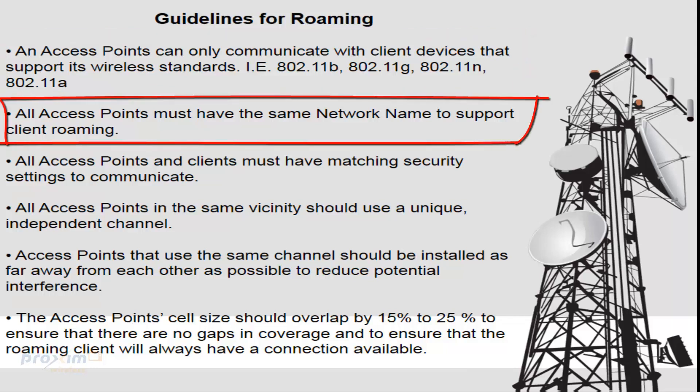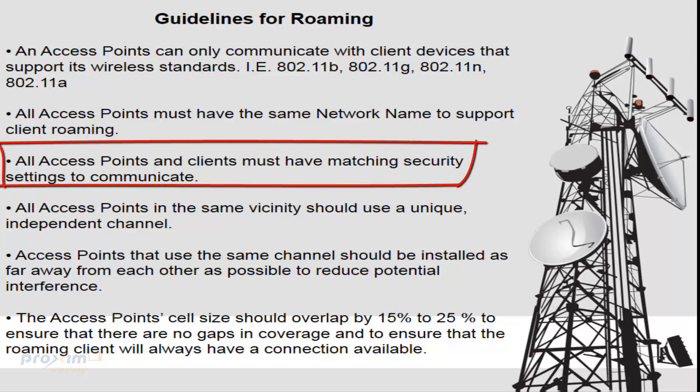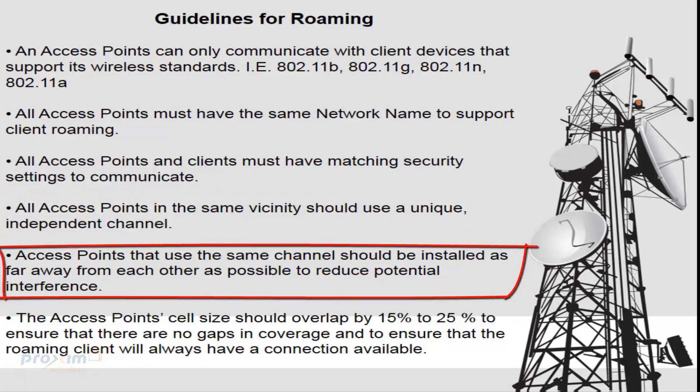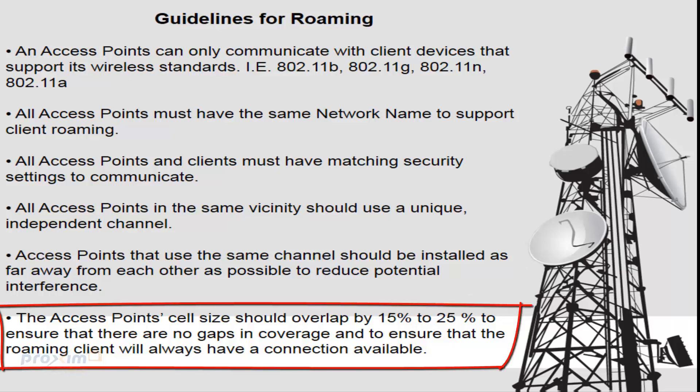All access points must have the same network name to support client roaming. All access points and clients must have matching security settings to communicate. Very important. All access points in the same vicinity should use a unique independent channel. All access points that use the same channel should be installed as far away from other access points as possible to reduce the potential of interference. Access point cell size should overlap by about 15% to 25% to ensure that there are no gaps in coverage and to ensure that roaming clients will always have a connection available.